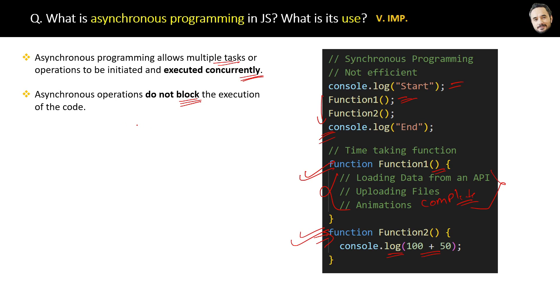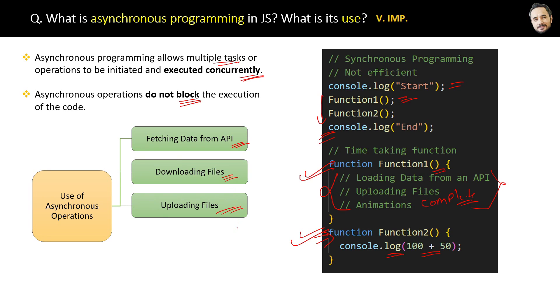So the first can be fetching the data from external APIs, second while downloading large files, then while uploading large files, then doing some operations like animations and transitions, or any time-consuming operations. So that is the idea of the use of asynchronous programming.